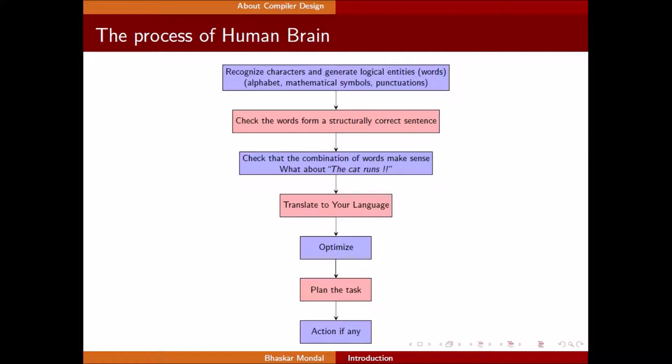Translate to your language. Say I'm a Hindi speaking person. I have read this sentence in English. To understand it, I have to translate the three words - the cat runs - into my own language, Hindi. Next, after doing it, I will optimize it to better understanding and then plan the task. If it is a problem, then I have to know how to respond to that sentence, what response I will do. Then if I plan some task, then we will take that action. This is the way how our human brain recognizes some sentence and reacts to it.